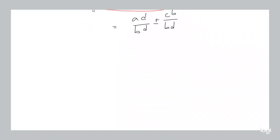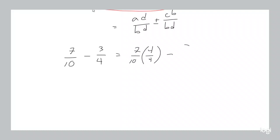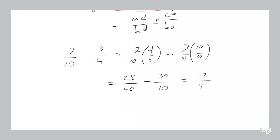As another example, let's do 7 over 10 minus 3 over 4. So that first fraction we multiply by 4 over 4, and that second fraction we multiply by 10 over 10. Multiply the tops: we get 28. Multiply the bottoms: 40. Minus multiply the tops: 30. And multiply the bottoms: 40. Now we have a common denominator.